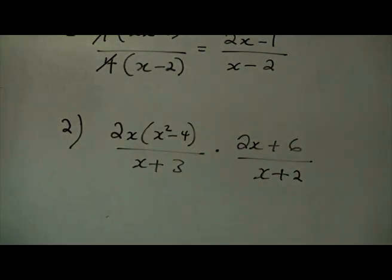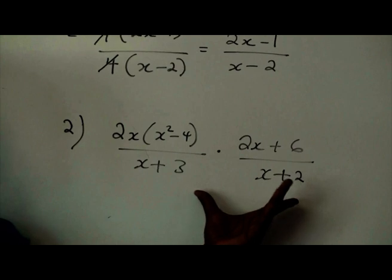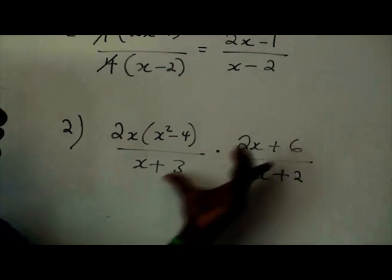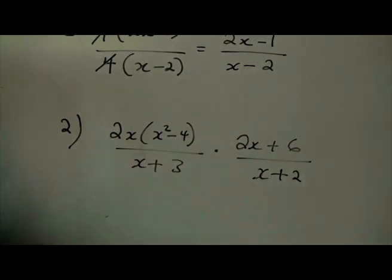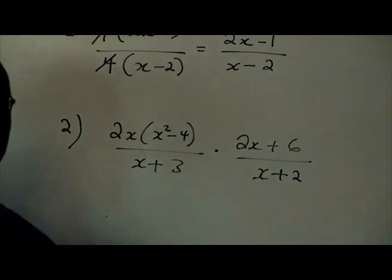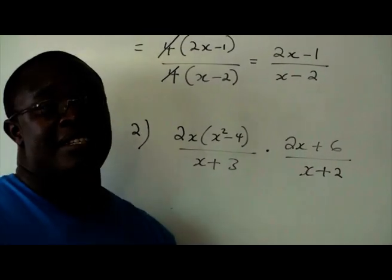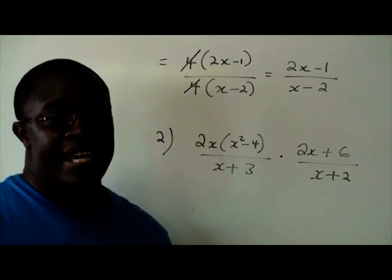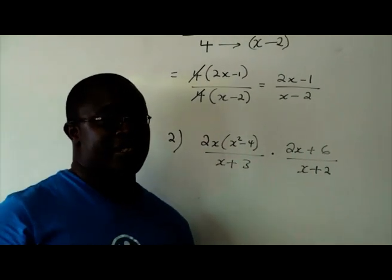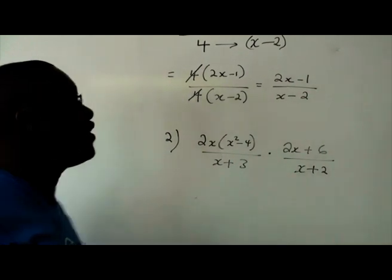Right. So we have a fraction here where we have two fractions multiplying each other. So the first and foremost thing, because it's multiplication, we can cancel across the sign. We're saying that check to see if there are any common factors. Are there any common factors?